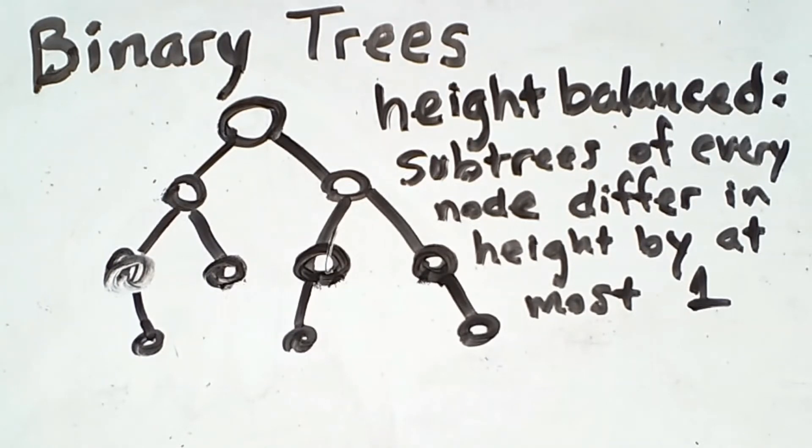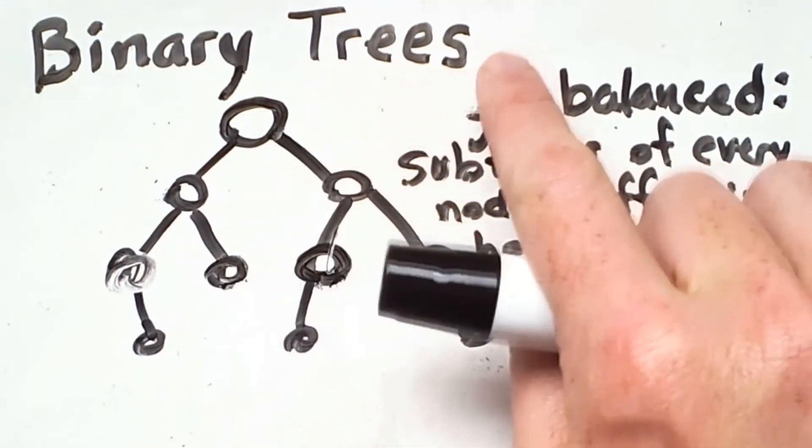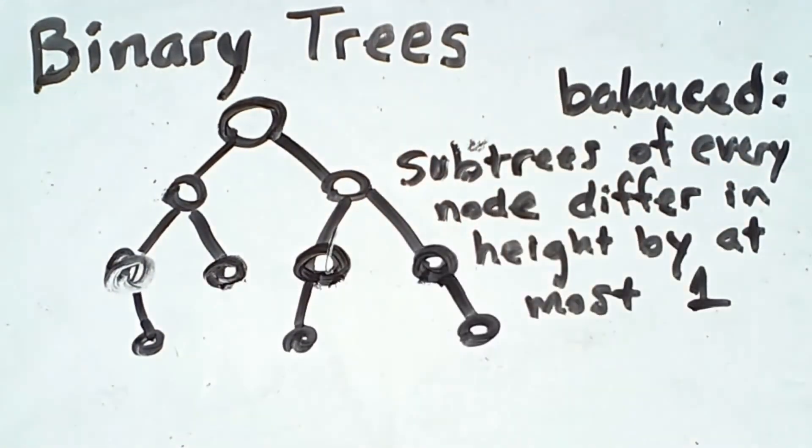In fact, to make discussing this concept less tedious, we normally simply refer to such trees as being balanced. So height balanced simply means balanced.